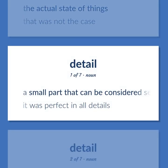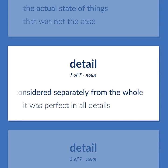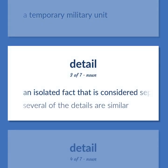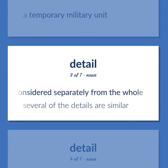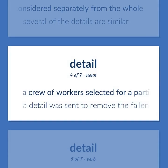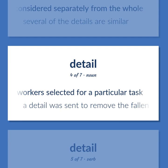Detail: A small part that can be considered separately from the whole — it was perfect in all details. A temporary military unit. An isolated fact that is considered separately from the whole — several of the details are similar. A crew of workers selected for a particular task — a detail was sent to remove the fallen trees.